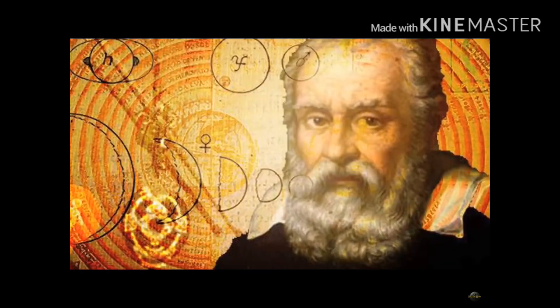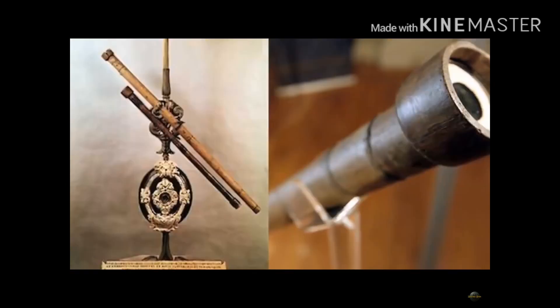The next person we study is Galileo. Galileo was a famous musician and he was teaching music. He heard that some person named Johansson invented an apparatus through which objects can be magnified.